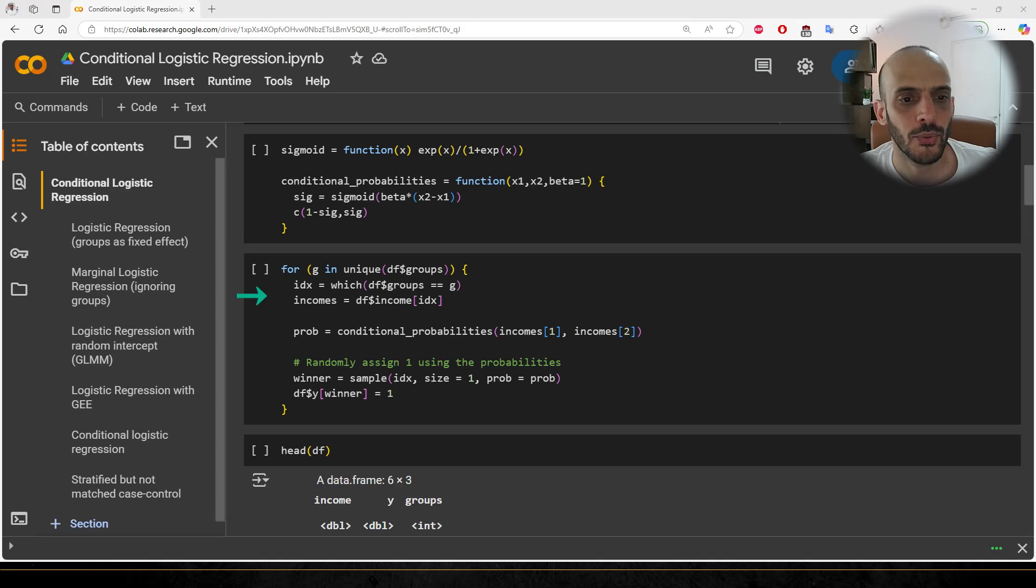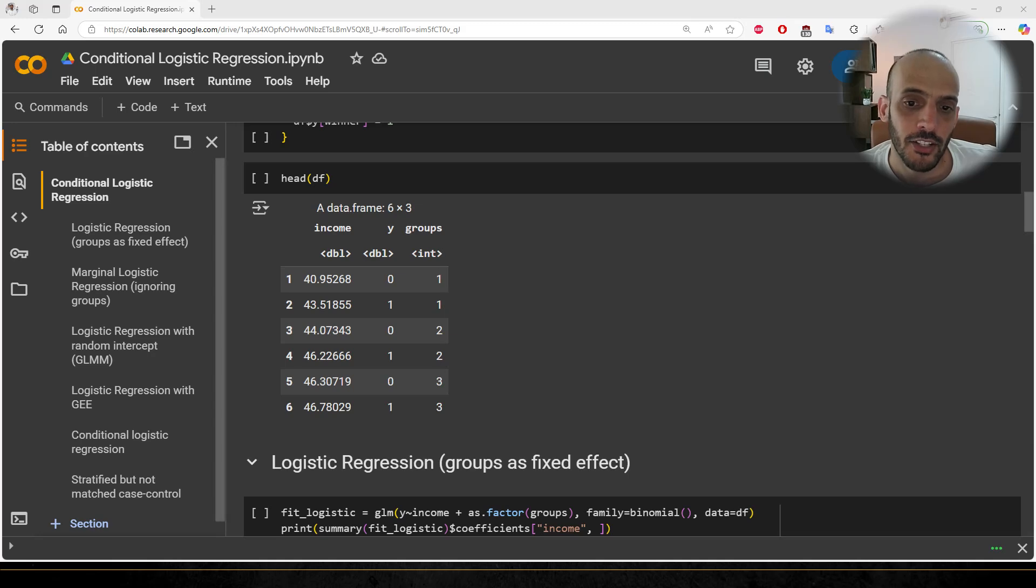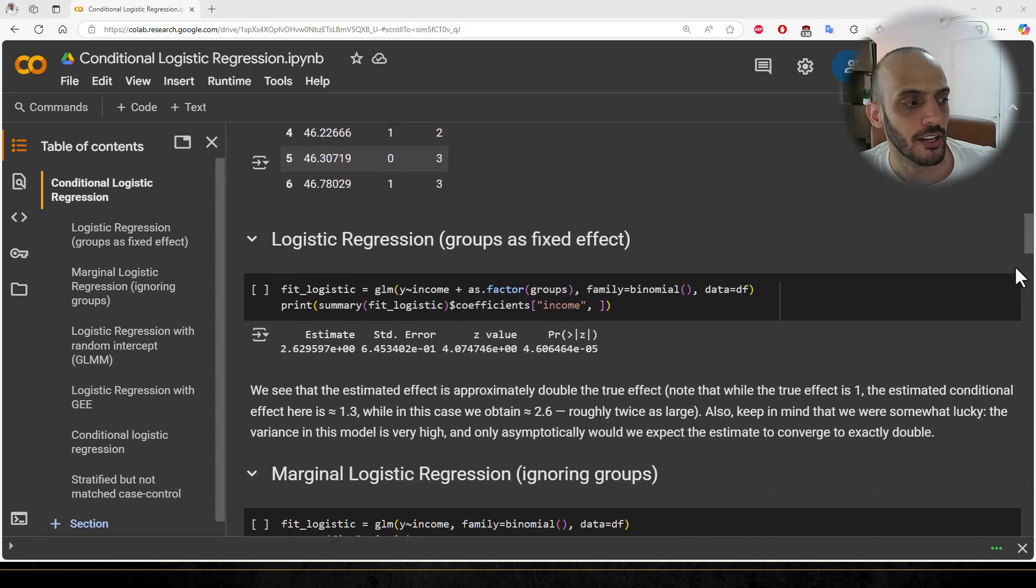Here is the code for calculating the conditional probabilities. Next, I set the y values according to the conditional probabilities within each stratum. You can see the first few observations of the dataset here.